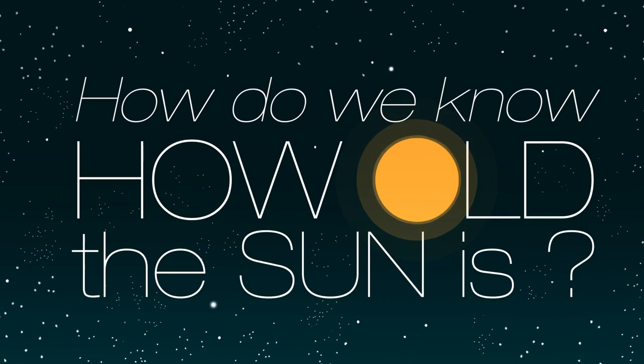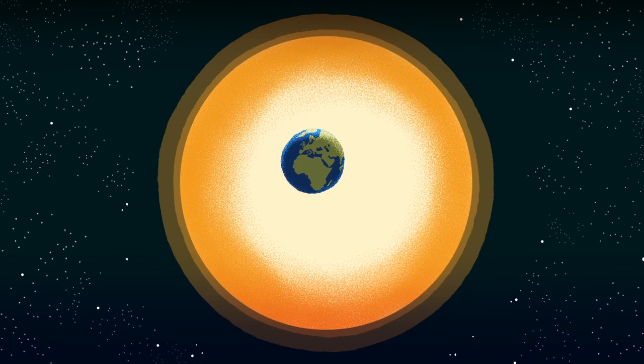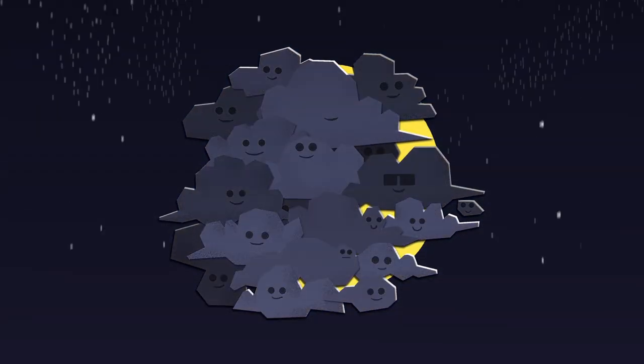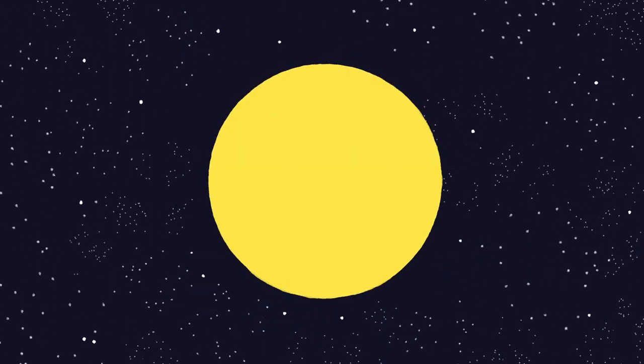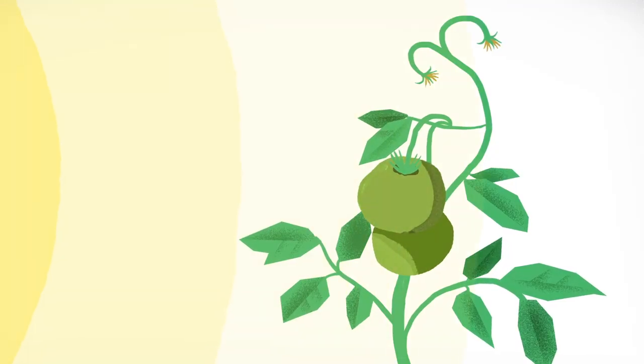How do we know how old the Sun is? Our existence depends on the Sun. When clouds get in the way, or we rotate away from it on the Earth and have our nighttime, it's there, radiating light in all directions and sustaining life on Earth.